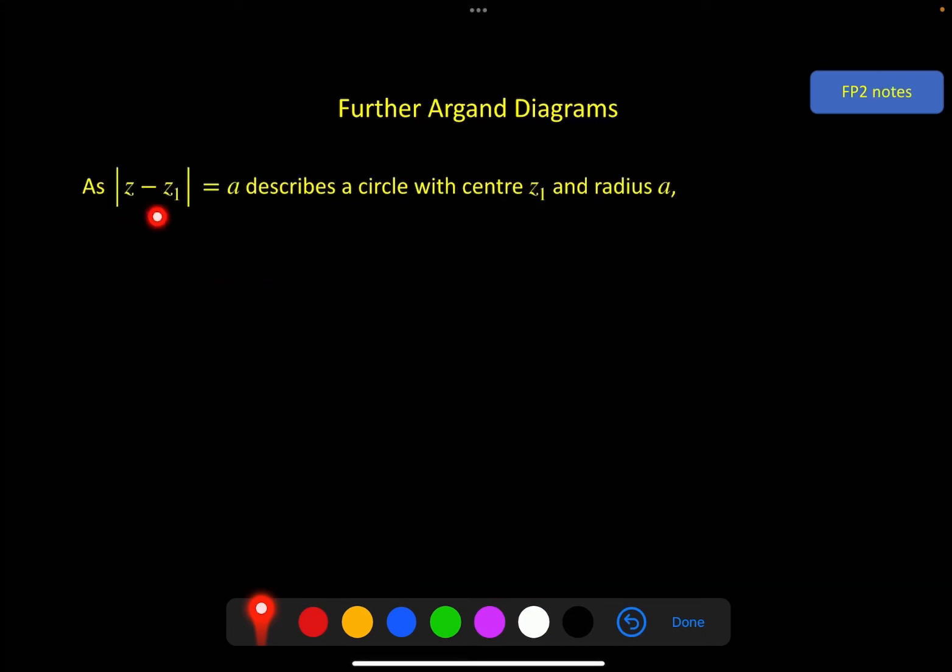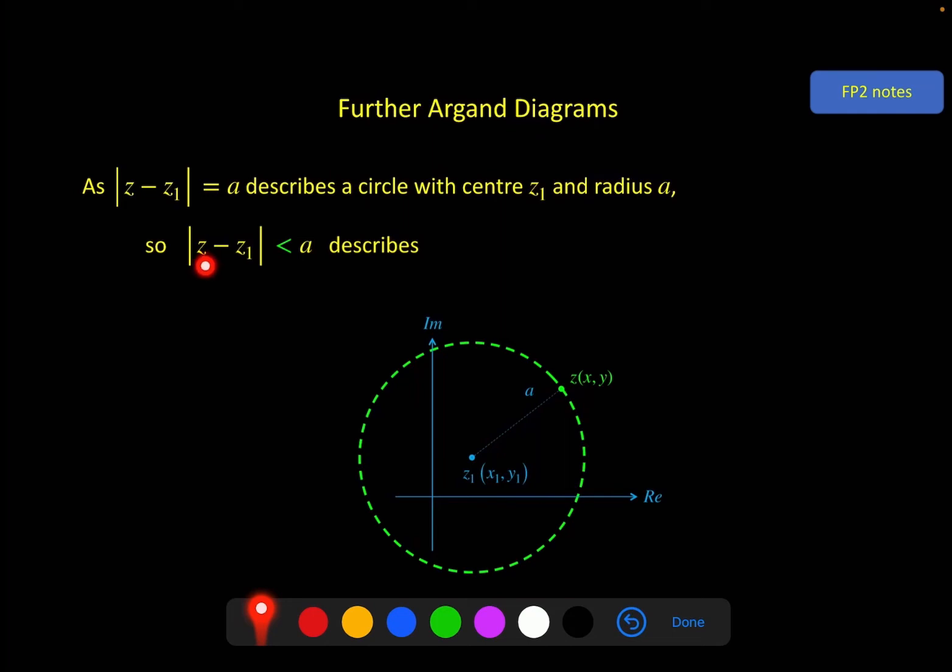So as we know, |z minus z1| within a modulus, that's the distance of z from z1, is equal to a constant a, describes a circle with the centre z1, and radius a, like this. Knowing that, if we replace the equals with a less than symbol, then that's saying the distance from z to z1 is less than a, so that's anything within the circle.